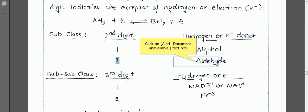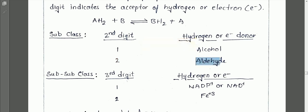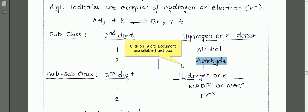If the second digit is 1, the donor of the hydrogen or electron molecule is the alcohol group. If the second digit is 2, the donor is the aldehyde group. So 1.1 means oxidoreductase with alcohol donor, and 1.2 means oxidoreductase with aldehyde donor.